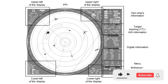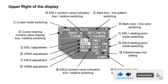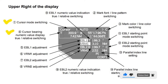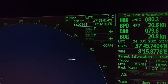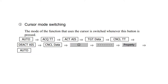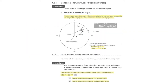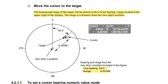Let's see some more of the radar functions: cursor mode switching and cursor bearing numeric value display, true/relative switching. Move the cursor to the target and the bearing and range of the target will be shown in the cursor bearing range, located at the upper right of the display. The range is the distance from the own ship's position.